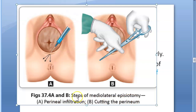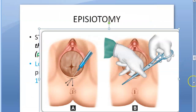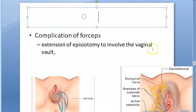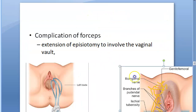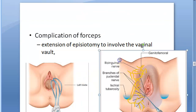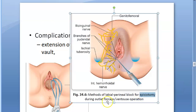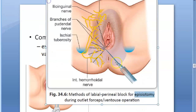For outlet forceps or ventouse operation, the block is given in a different direction. Now, moving on to the incision: two fingers are placed in the vagina between the presenting part and the posterior vaginal wall. The presenting part here is the head of the baby. Then an incision is made by a curved or straight, blunt, sharp, pointed scissors — or you can use a scalpel. Here they are using scissors.